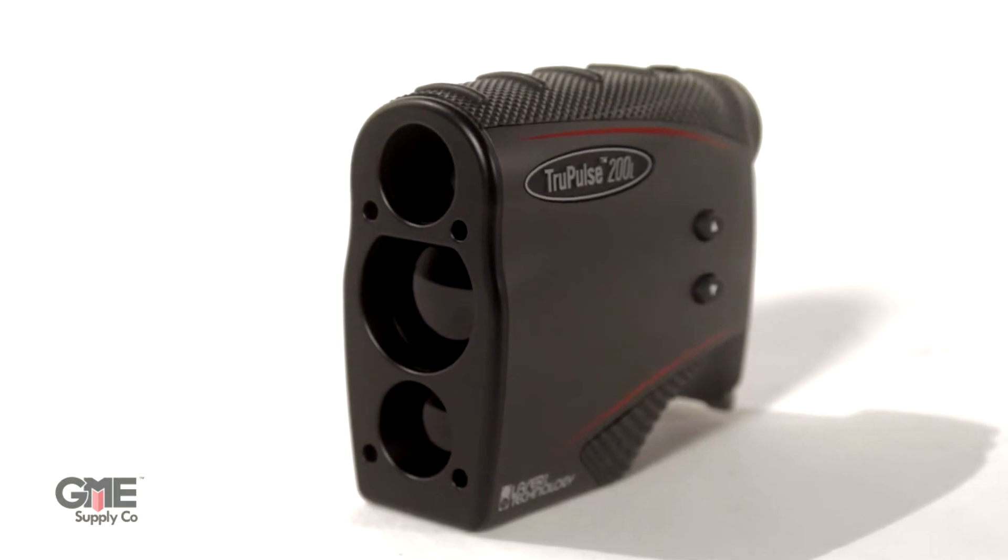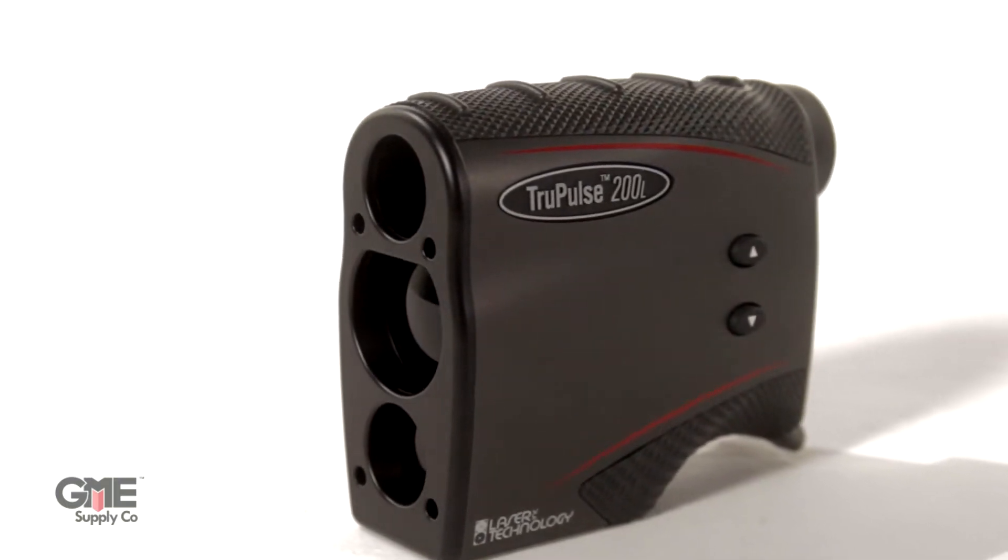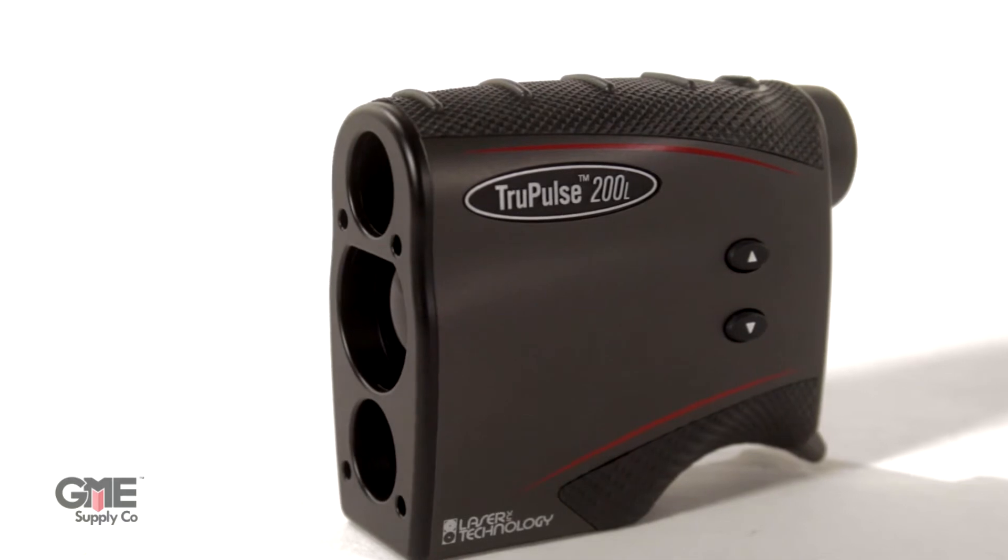I'm Conor with GME Supply and today we're taking a look at the TruPulse 200L Laser Rangefinder from Laser Technologies. The 200L from TruPulse is a versatile handheld laser rangefinder that is designed to make professional measurements at an affordable price.